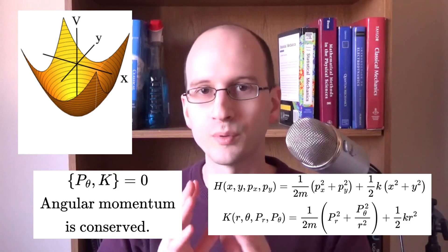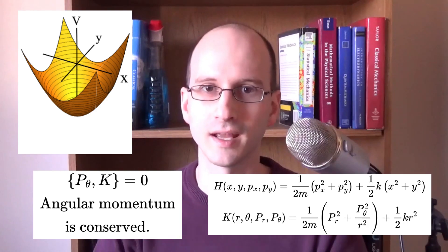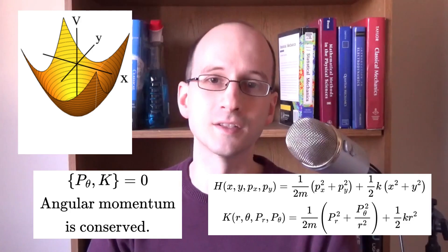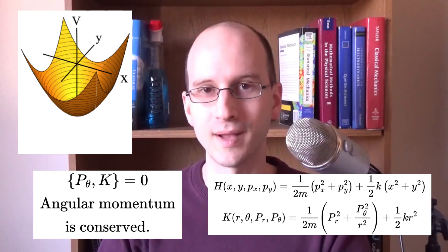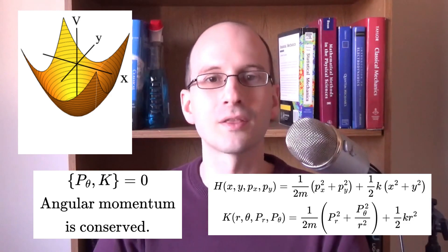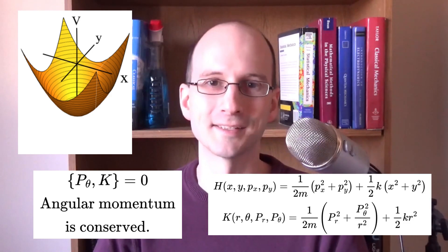As a side note, there's no theta in H, so if we Poisson bracket H with the angular momentum, we get zero, which means in this system, the starting angle doesn't matter and angular momentum is conserved. That's not important for today's lesson, but I thought it was an interesting application of last time.